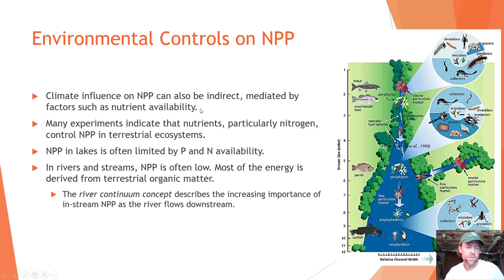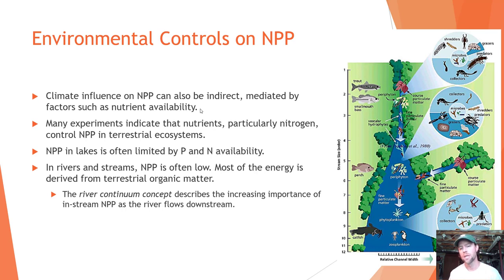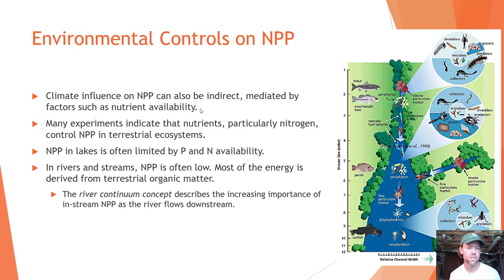Climate influence on net primary productivity can also be indirect, mediated by factors such as nutrient availability. Many experiments indicate that nutrients — particularly nitrogen — control NPP in terrestrial ecosystems, and that primary productivity in aquatic systems is often limited by phosphorus and nitrogen availability. Recall from the lecture on alternate stable states, where nitrogen and phosphorus leaching into lakes caused a large increase in primary productivity and shifted the system into an alternate state.